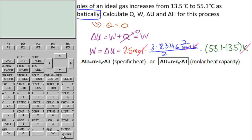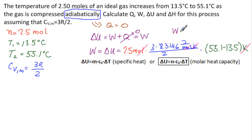So let's get our calculator. We have 2.5 times 3 times 8.3146 divided by 2, and then times a parenthesis, 55.1 minus 13.5, and the parenthesis. Enter. 1297 joules. W equals delta U equals 1297 joules.